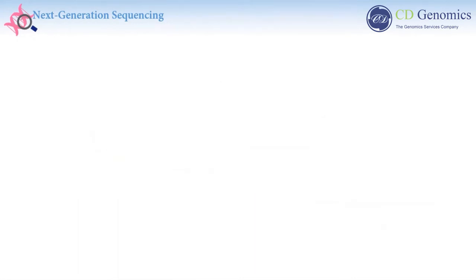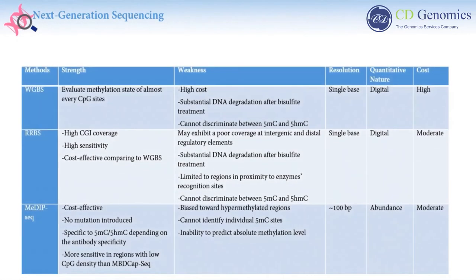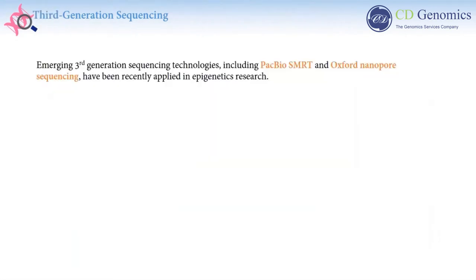This table compares the strength, weakness, resolution, quantitative nature, and cost of three methods. Bisulfite conversion-based methods, including WGBS and RRBS, provide single-base resolution. However, RRBS may lack coverage at intergenic and distal regulatory elements. MeDIP-seq is cost-effective, but typically has a resolution of 100 to 300 base pairs and cannot discriminate methylation contacts.